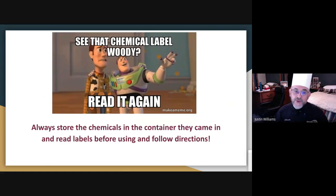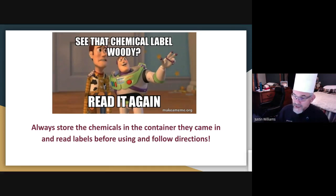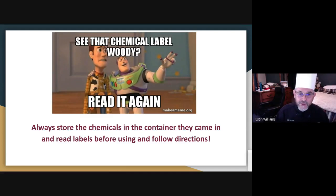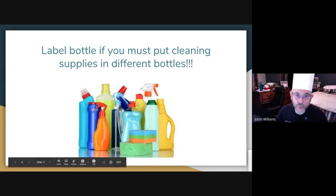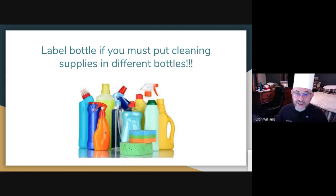Read the label — see what the label says — and read it again. Always store chemicals in the container they came in and read the labels before using them. Best case scenario: you use it straight out of the bottle without adding anything — it comes in, stays in the original labeled bottle. However, if you need to move a chemical into a spray bottle or different container, you must label that bottle clearly with what it is and where it came from, so everybody in the entire kitchen knows what's in it and there are no mishaps.